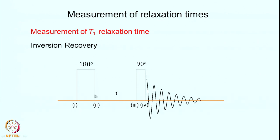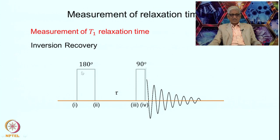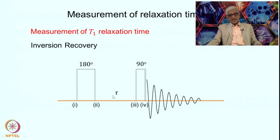We had already looked at some application of this strategy in water suppression, but we will look at how one can use it to measure T1 relaxation times. The pulse sequence is simple: we have a 180-degree hard pulse in the beginning applied to all spins, then you wait for a time tau, and then at the end you apply a 90-degree pulse and collect the FID. The time points are 1, 2, 3, 4 and then data collection at 5. This tau is adjustable and depending upon how you adjust it you get different kinds of signals.